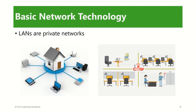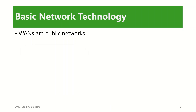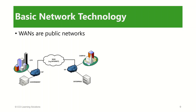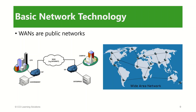A wide area network, or WAN, is a type of network that connects computers in multiple locations using communication lines owned by a public carrier, such as a phone company or internet service provider. Whenever LANs are connected to one another using the lines of a public carrier, a WAN is formed. The internet is the largest WAN in the world — it connects individuals and networks from around the world using public communication lines. Remember, WANs are public networks.